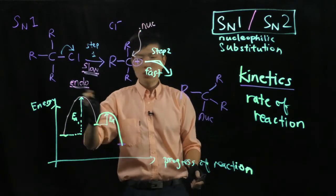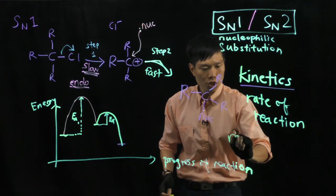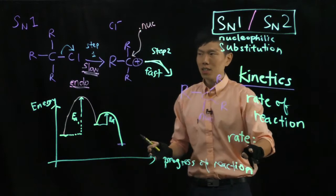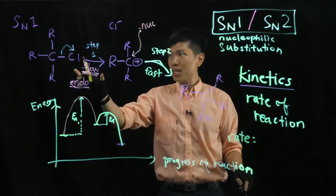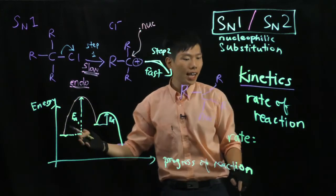Now, we know that the kinetics of any chemical reaction, we have what we call the rate equation. So, we always look at the rate determining step, the slow step in this case. Now, in the slow step, which is step one, we only involve one reactant. And that's the alkyl halide.